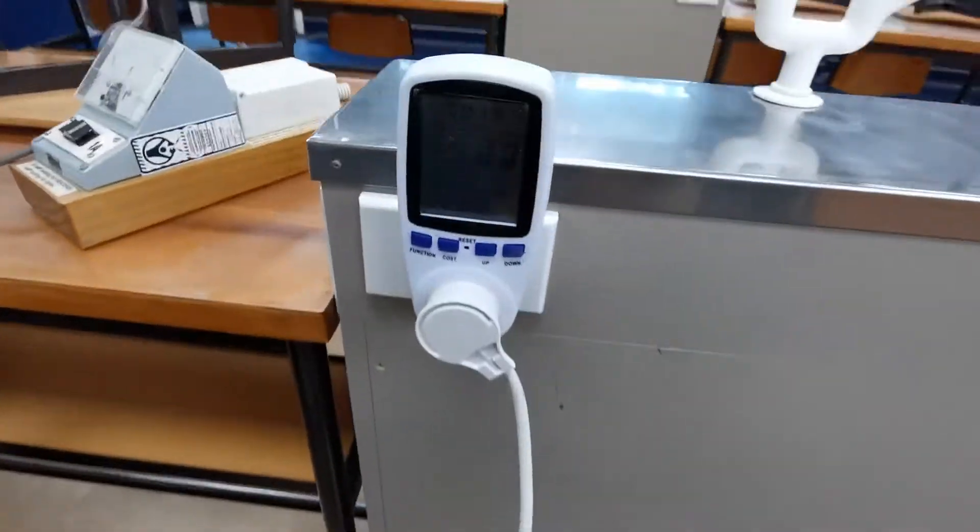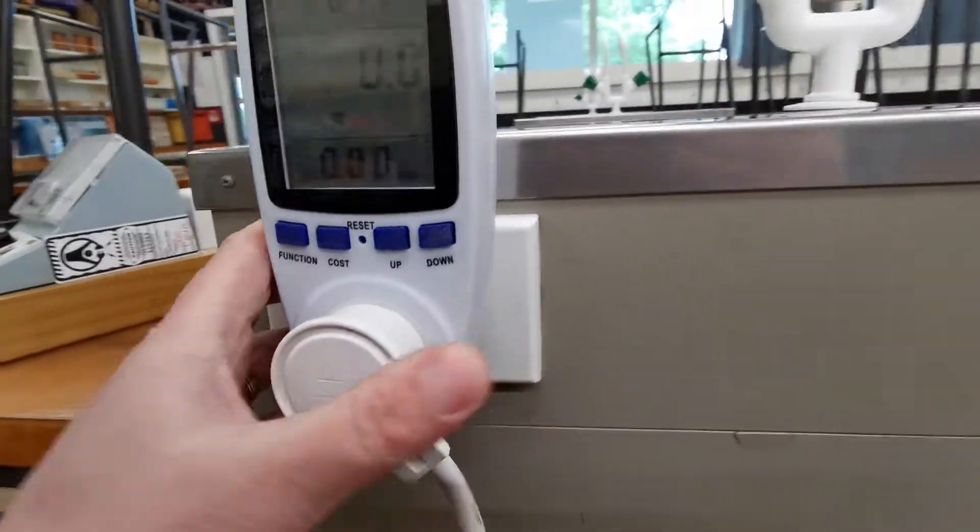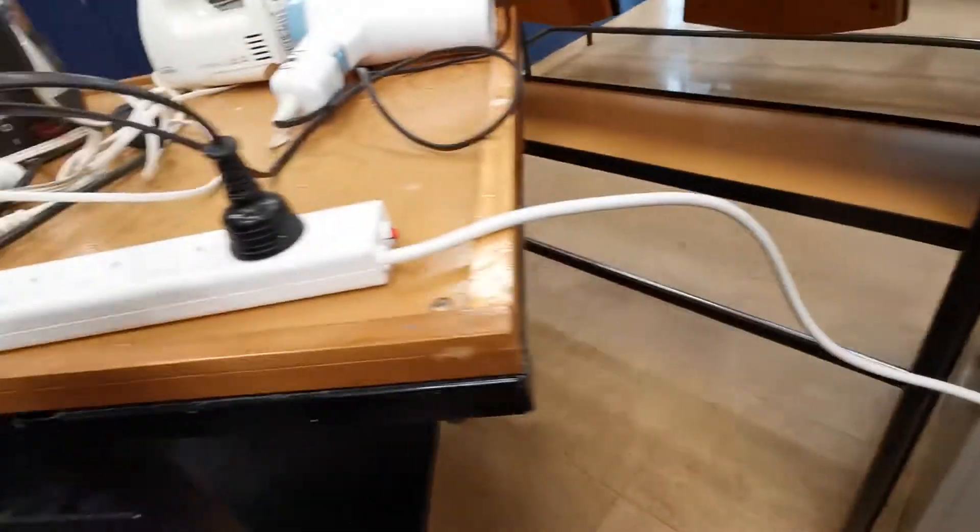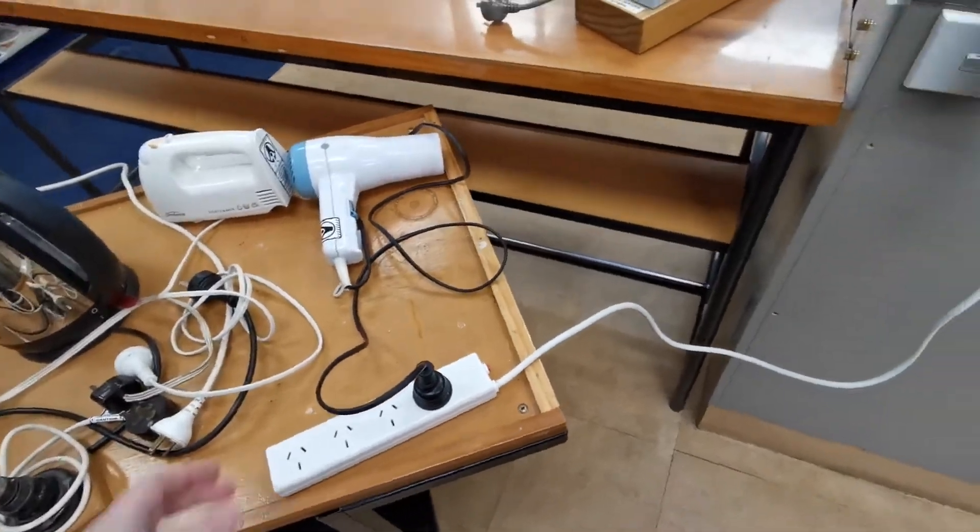The way we're going to do that experiment is that there'll be a whole bunch of appliances at the front and pupils will be able to grab one of these power meters, and then plug it in, and that goes into a 4 bar and so they can use a whole range of different appliances to test it.